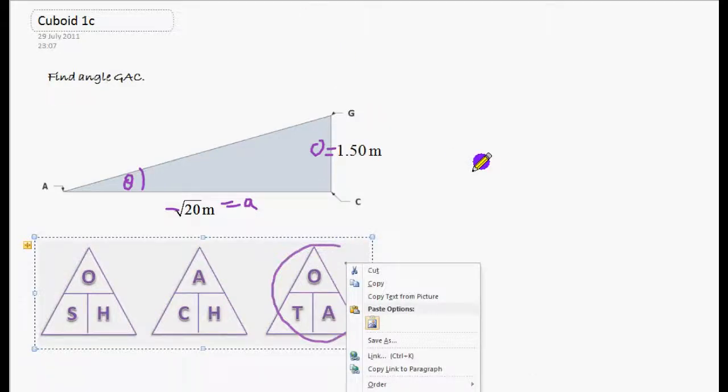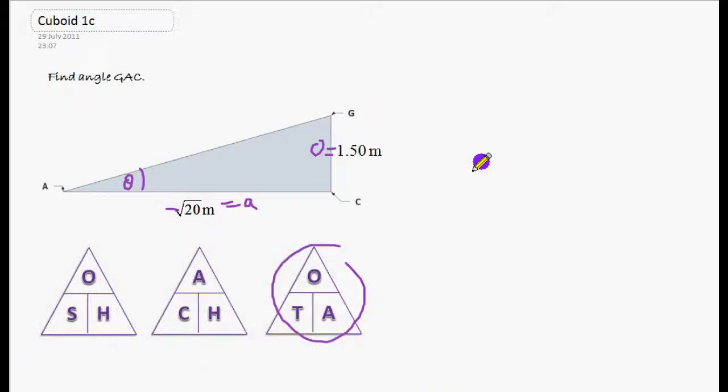We want to know the tan of the angle. So we're going to use the tan bit equals the O over A bit. And the tan bit, remember, is tan of the angle. We're going to call the angle theta here. So tan theta will equal the opposite, 1.5, over root 20.